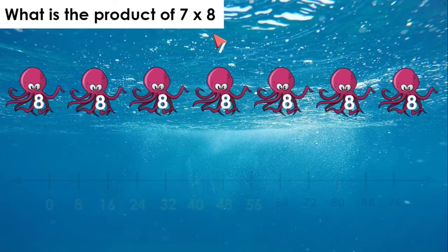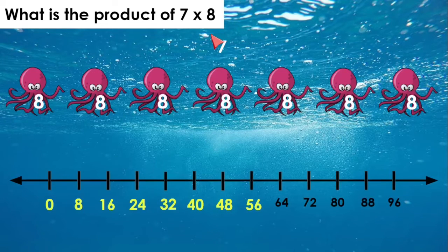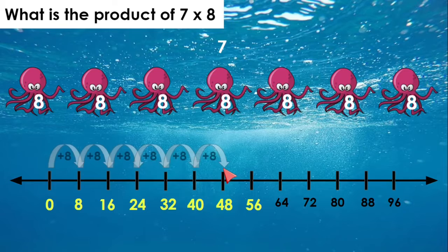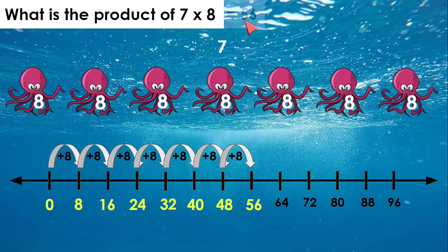7 times 8. Let's go ahead and skip count. So far, we're at 48. Let's add 8 more. 48 plus 8 more is 56. 7 times 8 equals 56.